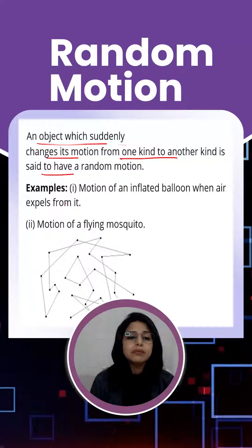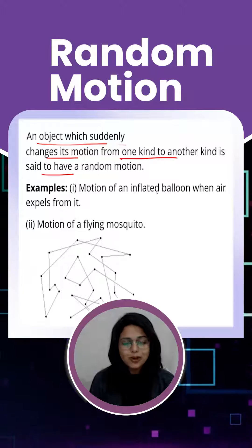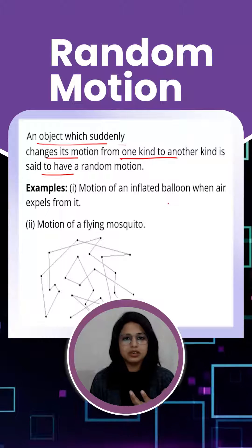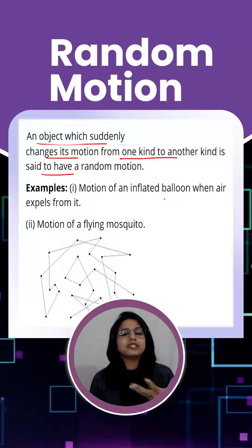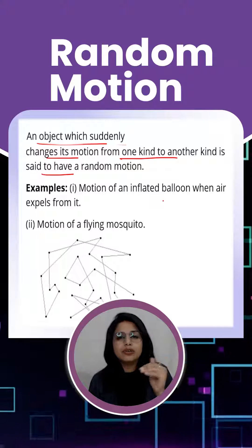So talking about examples - one is me, second is obviously anything that is flying, like a balloon or a kite. They do not have a fixed type of motion. They're not only translatory; they're going to go here and there, randomly moving. That is called random motion.